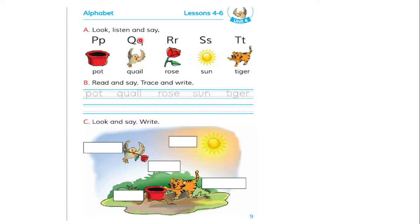We have letters. P for pot, Q for quail, R for rose, S for sun, T for tiger. Now you can try to spell and write.